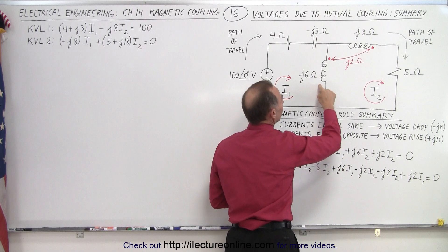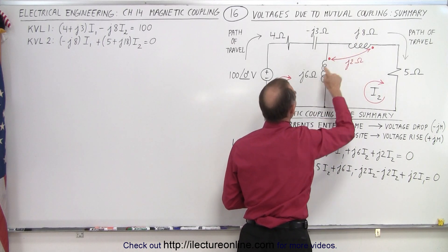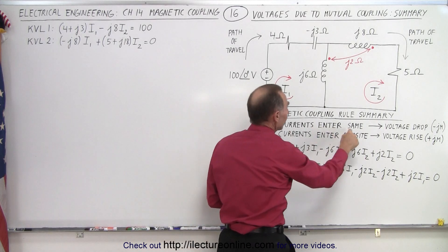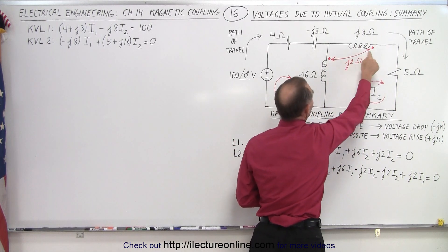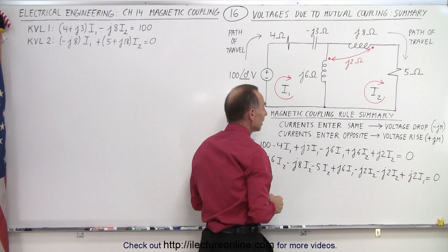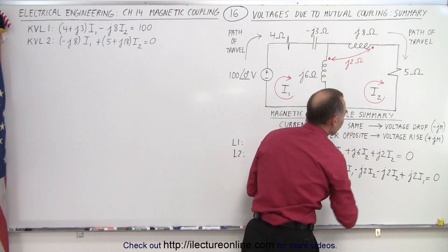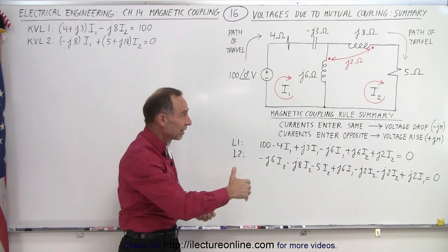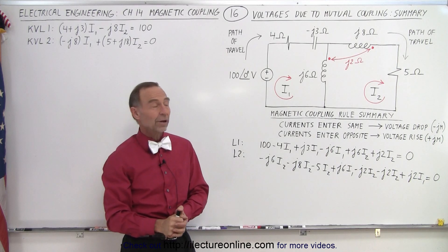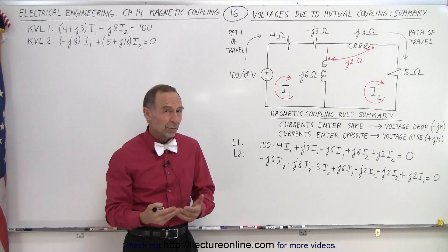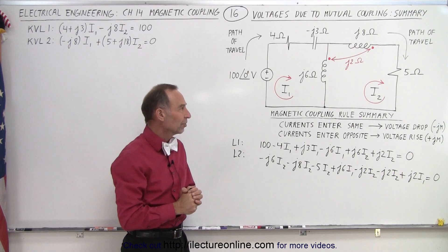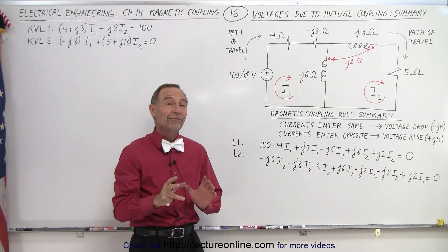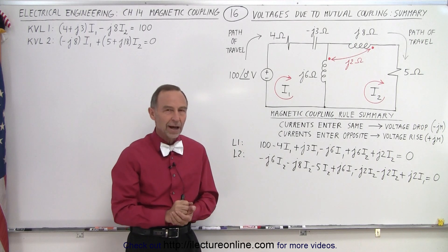you have to identify which current goes through each inductor. For the coupling term, you write the mutual reactance times the other current, and it's either plus or minus depending on the dot rule: if the currents both enter the dot side or both enter the opposite side, that's a voltage drop; if they enter opposite sides, that's a voltage rise. If you can remember those rules, it becomes straightforward — just go around each mesh and add up all the voltage rises and all the voltage drops without drawing arrows or diagrams. In the next video, we'll finish the problem by actually calculating the currents.